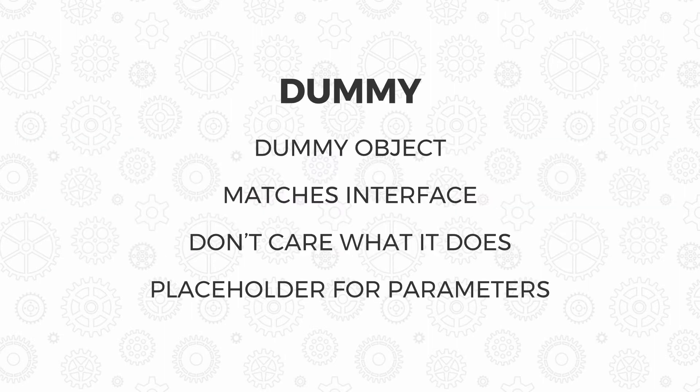We have lots of different types of test doubles. Firstly, we've got a dummy. A dummy object can be used in place of your production object, and it will match the interface of the thing it replaces. However, you don't really care what it does — it's just a simple placeholder that replaces something like one of your function parameters.